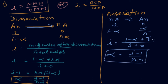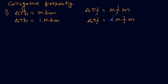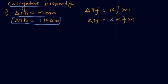The value of i is used in colligative properties. In the colligative property formulas: ΔTf (depression in freezing point) = i·Kf·m, and ΔTb (elevation in boiling point) = i·Kb·m. You must take care to include i when solving numericals involving association or dissociation.